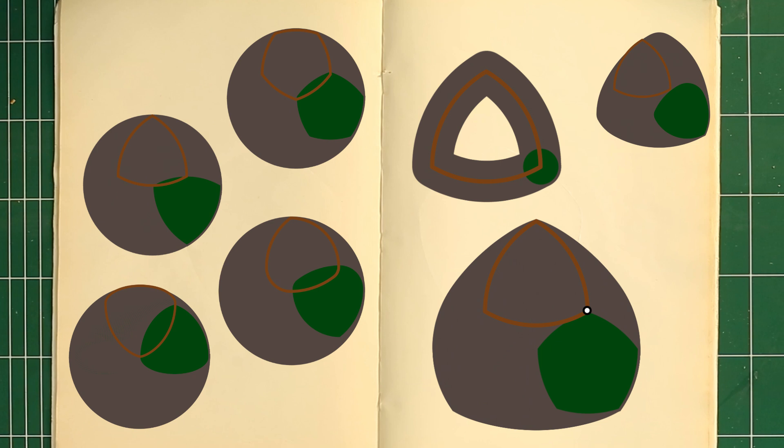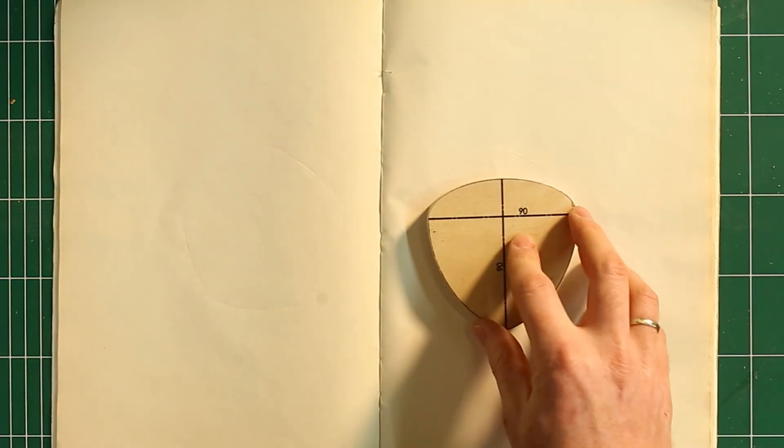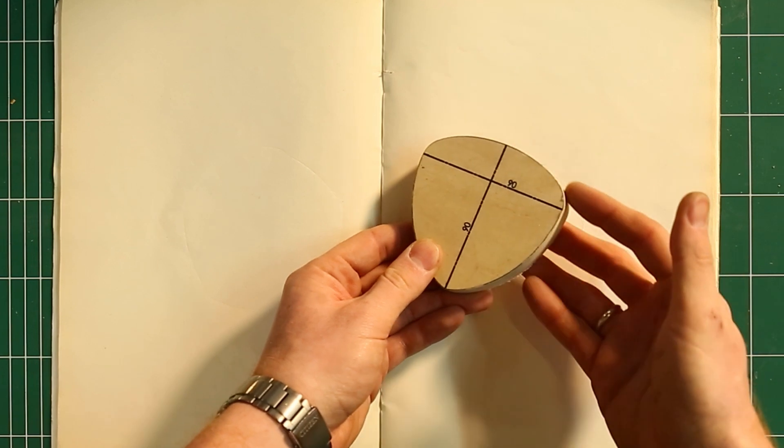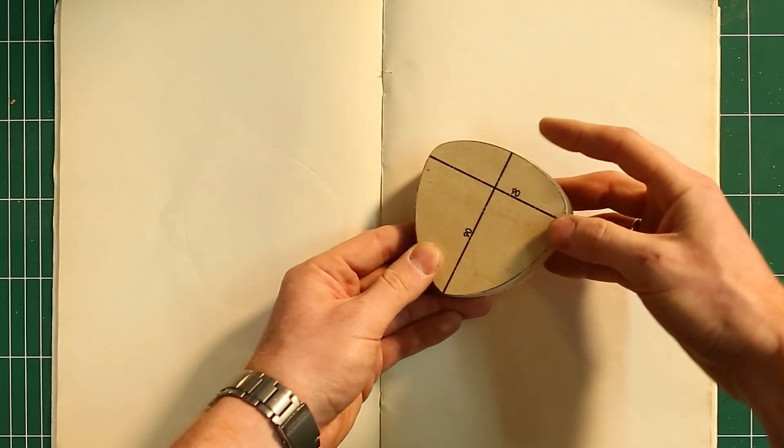Until now, all our constructions relied on stitching together different radii circle arcs. You might ask yourself if this is the only way of constructing shapes of constant width. As it turns out, you can also construct shapes like this one, which has no circular arcs at all. You can find more information about this shape and all others on my website. The link is in the description.